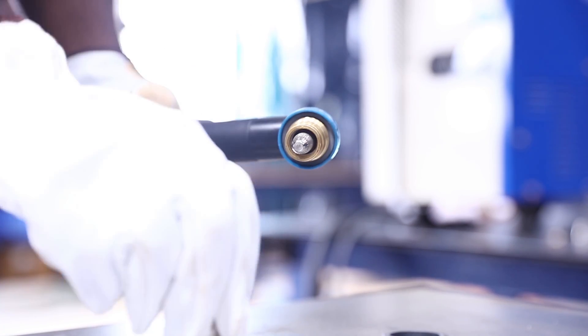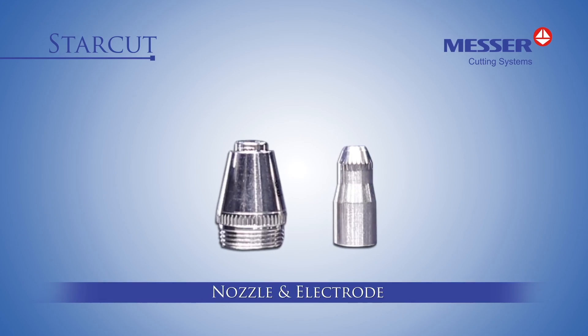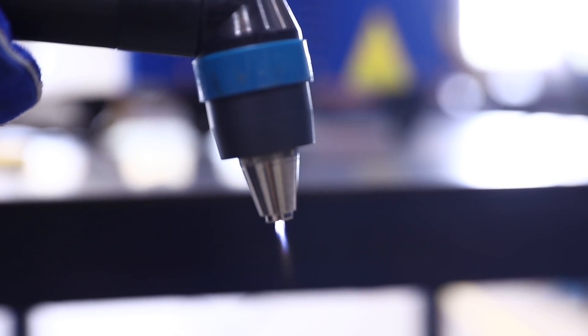Just remove the shield cap from the torch. You can view the parts inside—the nozzle and the electrode. The nozzle constricts the plasma jet and focuses it.